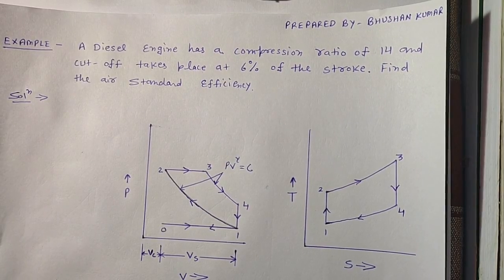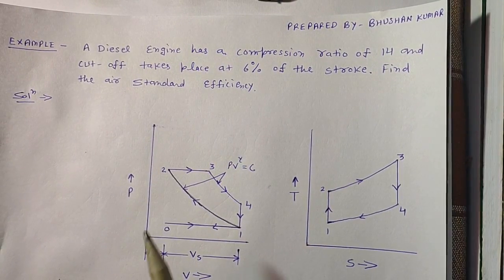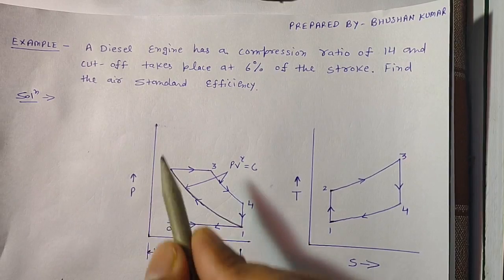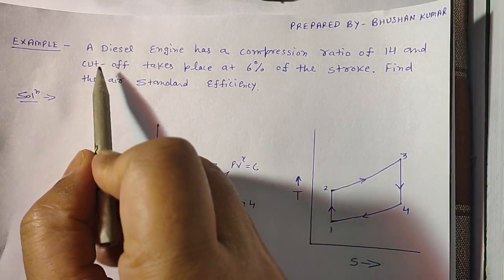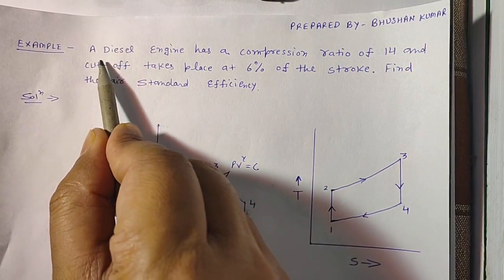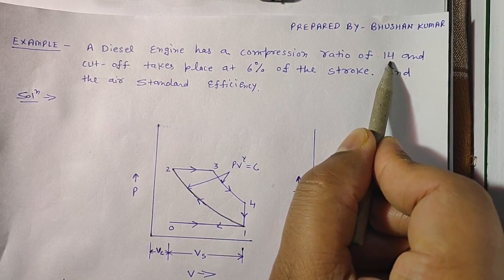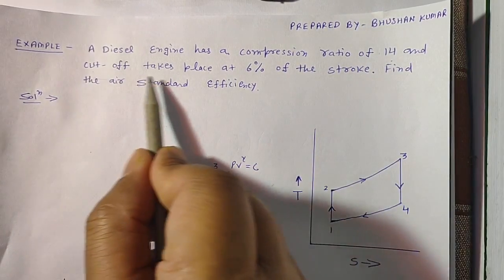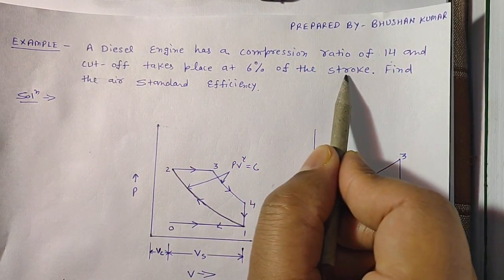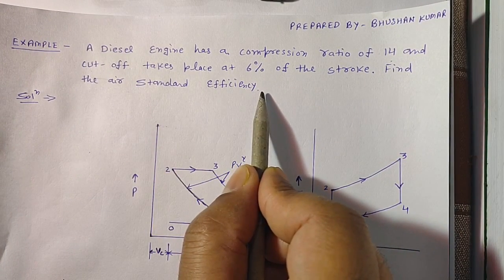Hello everyone. Now we will solve a problem on the diesel cycle. A diesel engine has a compression ratio of 14 — RK is given as 14 — and cutoff takes place at 6% of the stroke. Find the air standard efficiency.